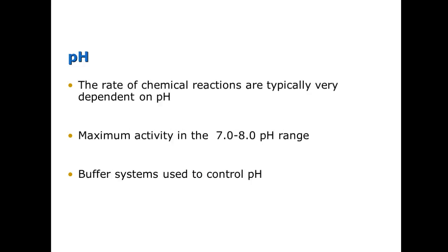pH is extremely important when it comes to enzymes. The rate of chemical reactions is typically dependent on pH, and maximum activity happens in the 7 to 8 pH range. Enzymes are made of protein, so if you subject a protein to a pH that is too acidic or too alkaline, you will denature that protein and it won't function properly. We use buffers in this type of testing to help control pH and resist changes in pH.